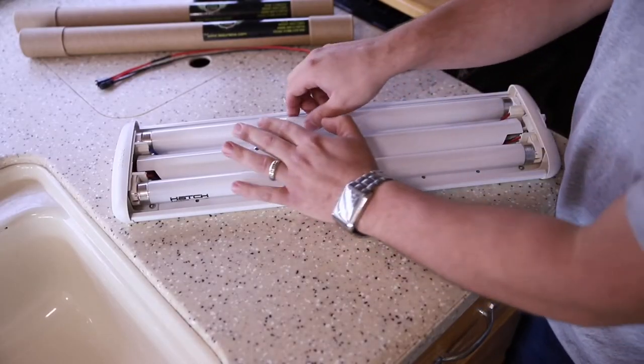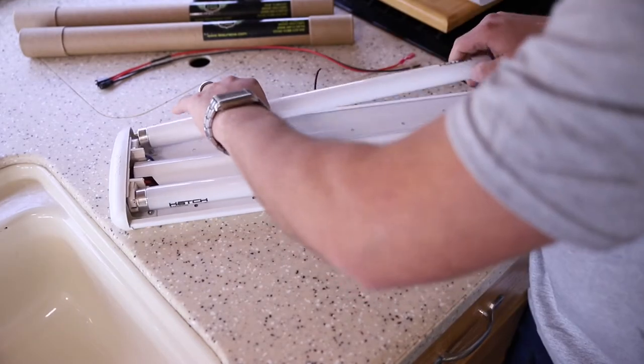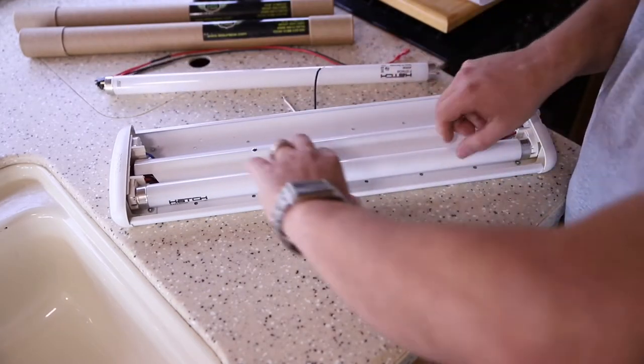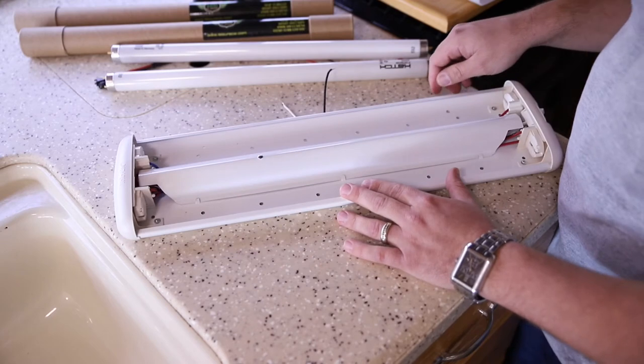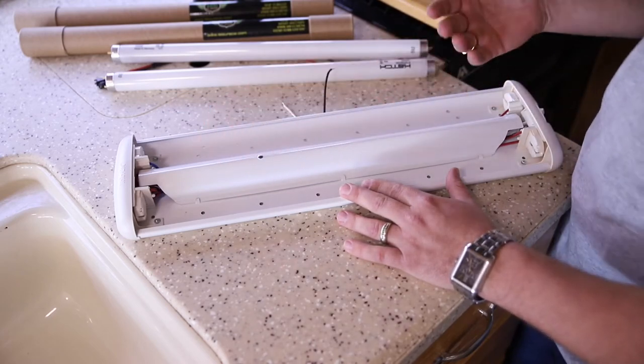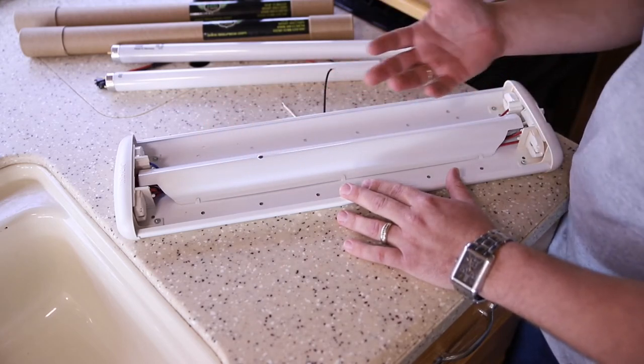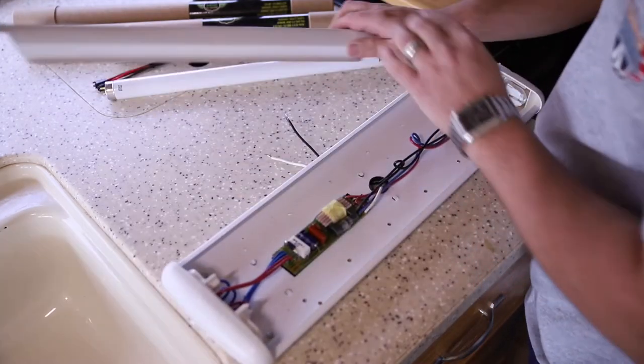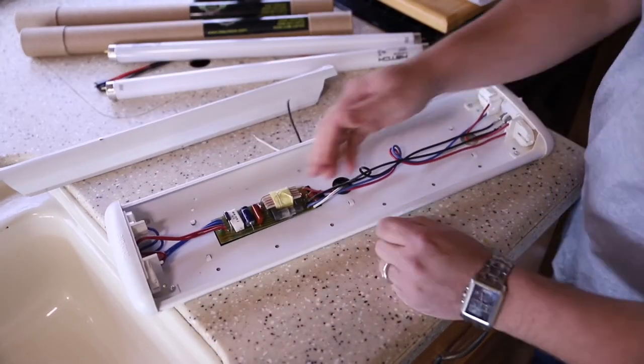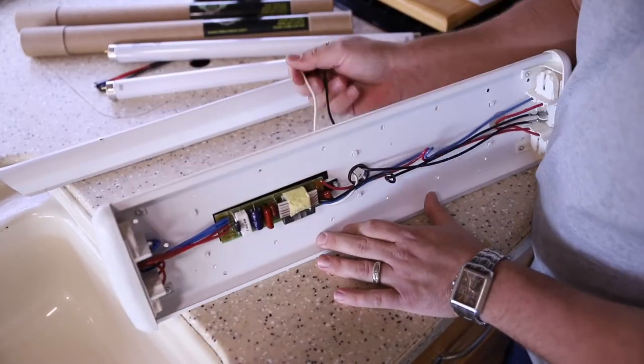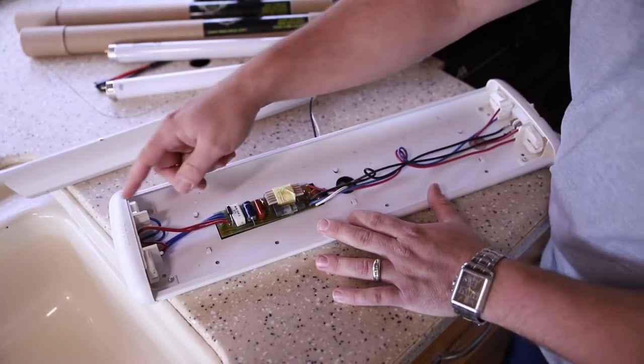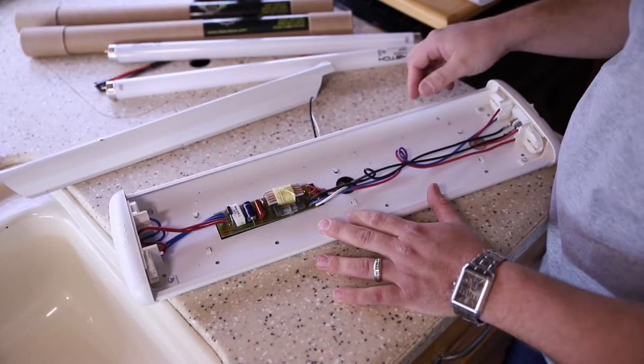Now that we have the fixture removed we can take the bulbs out. Got to get them to twist out here. Right here is actually the cover plate which is going to hide all of the ballast and the wiring that's in here. Now that's off you can see the wires that used to come in from the roof - this is the ballast sending voltage to the fixture.